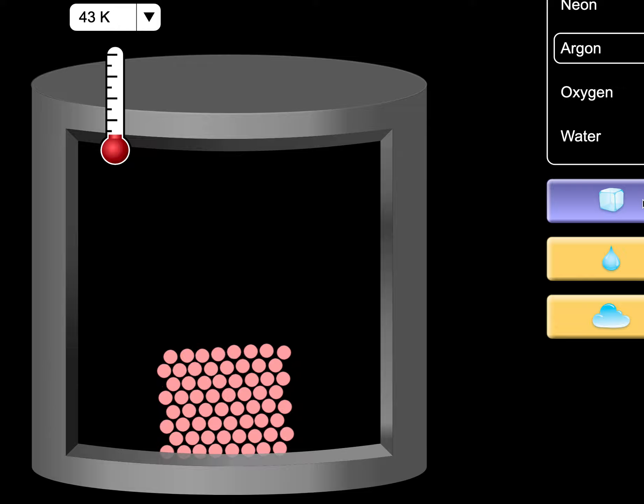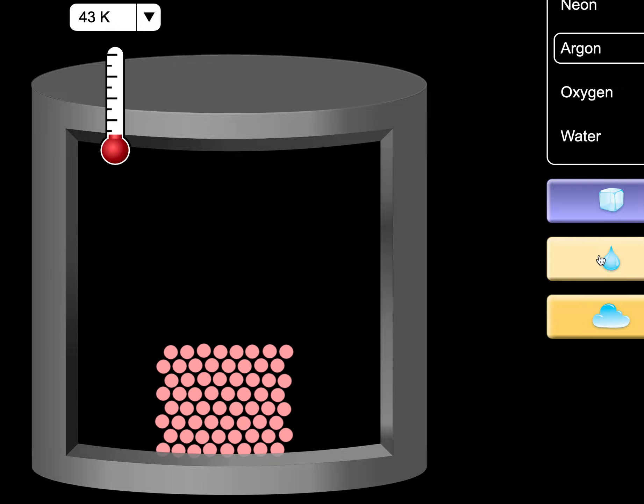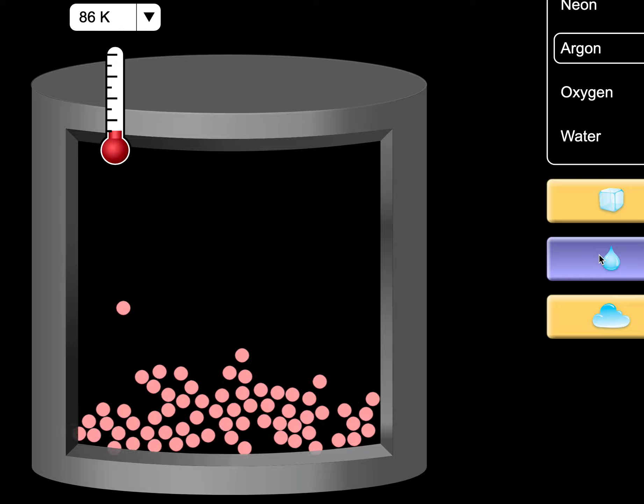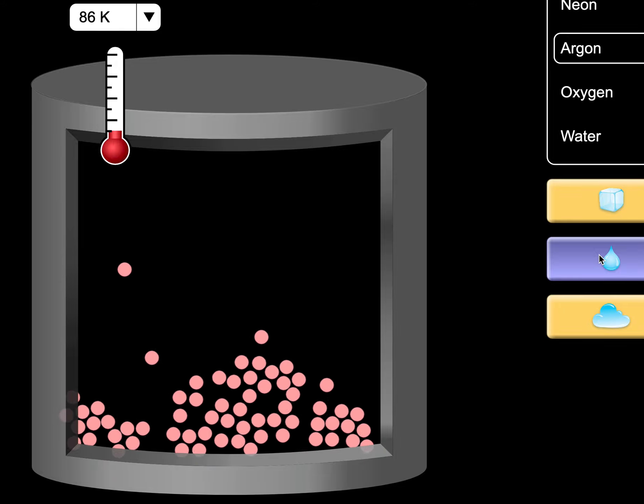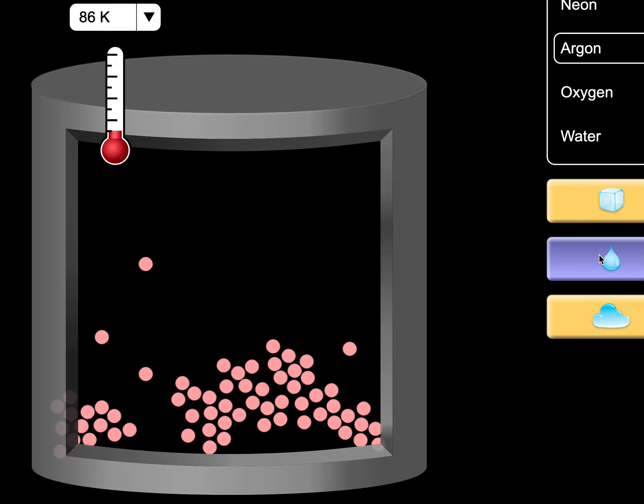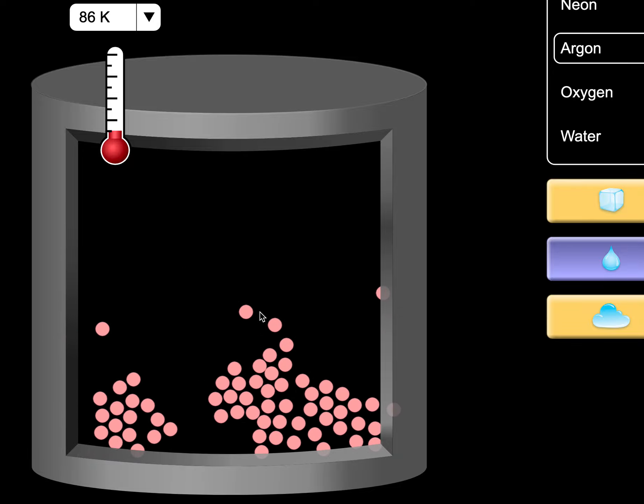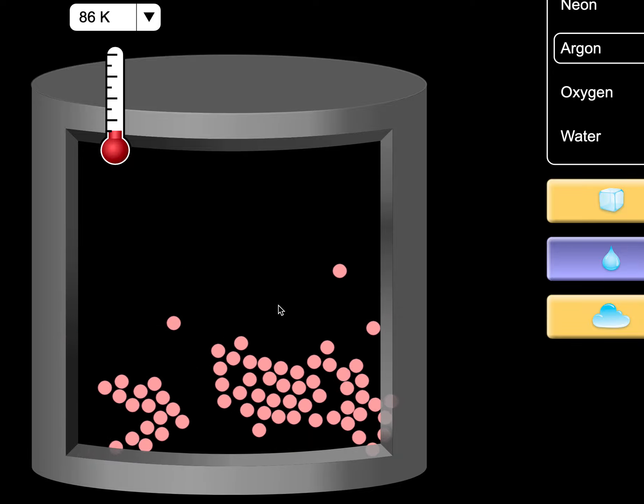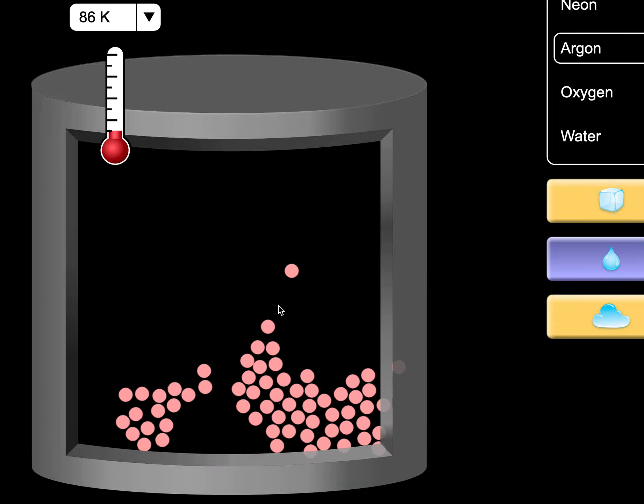So solid, all stuck together, add some amount of energy. Boom. We can break some of the bonds, turn it into a liquid. And in the liquid phase, we notice all of a sudden, hey, we've got some gas particles escaping and producing a vapor pressure.